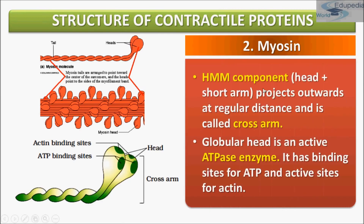The HMM component consists of the head plus the short arm, and it projects outward at regular distances — as you can see, many are projecting outwards at regular intervals, and this is called the cross arm. The head is a globular head that is an active ATPase enzyme, and it has binding sites for ATP and active sites for actin.